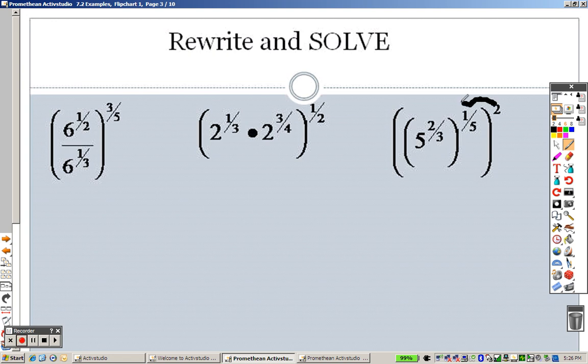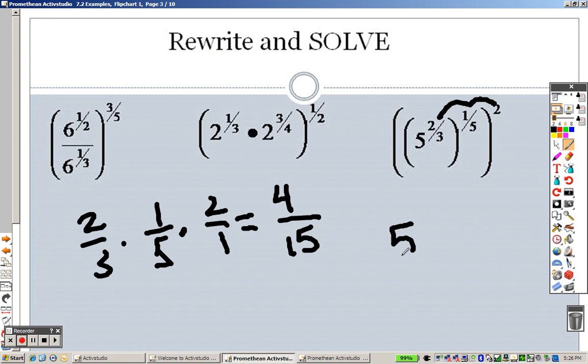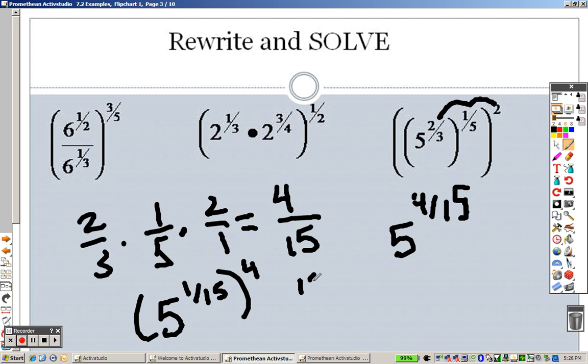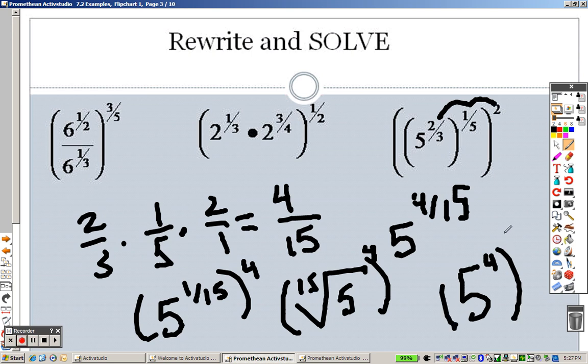And this one is just basically taking through multiplication the whole way through. So that's like saying 2 thirds times 1 fifth times 2 over 1. So just multiply everything straight across. 2 times 1 times 2 is 4. 3 times 5 times 1 is 15. So you get 5 to the 4 over 15. And once again, you can rewrite that as 5 to the 1 15th to the 4th power, which can be the 15th root of 5 to the 4th. Or we can do 5 to the 4th, all of that to the 1 15th, which is like saying the 15th root of 5 to the 4th. Either way, multiple ways to say that.